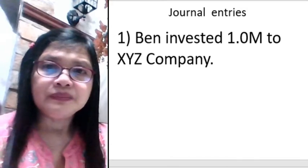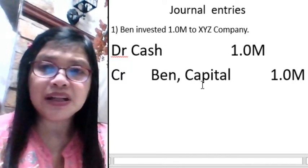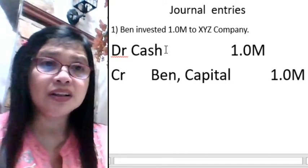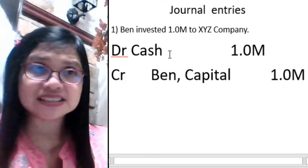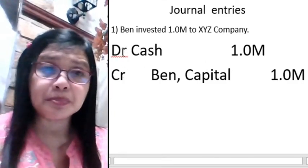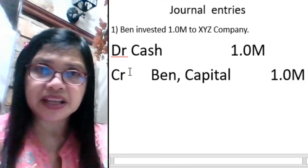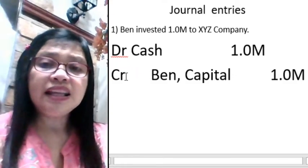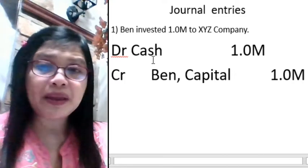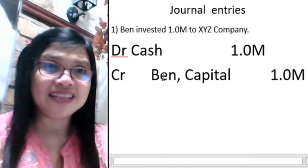When Ben invested 1 million, the capital account has a normal credit balance, so you credit 1 million. The company also received 1 million cash, so you debit cash 1 million. The first line is the debit; the indented line is the credit. Your debit and credit must always be equal. We are preparing journal entries — each with a debit entry and a credit entry.